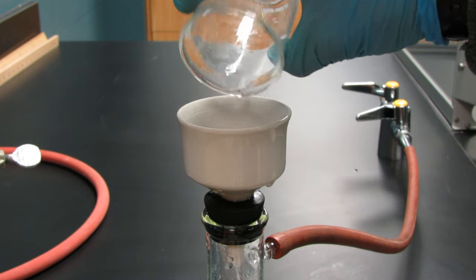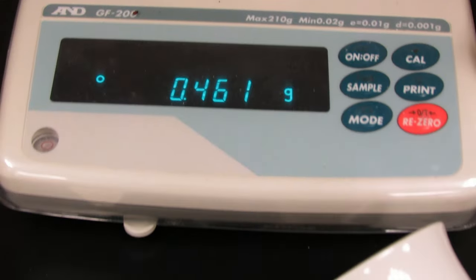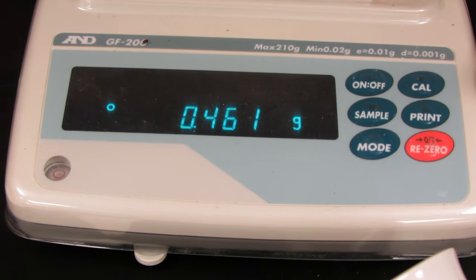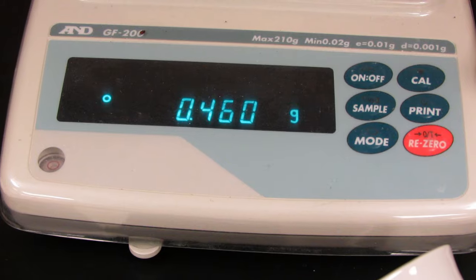We can perform a vacuum filtration. There's the copper we started out with. I weighed this and it was 0.461 grams, but I lost about 0.04 grams during this experiment.